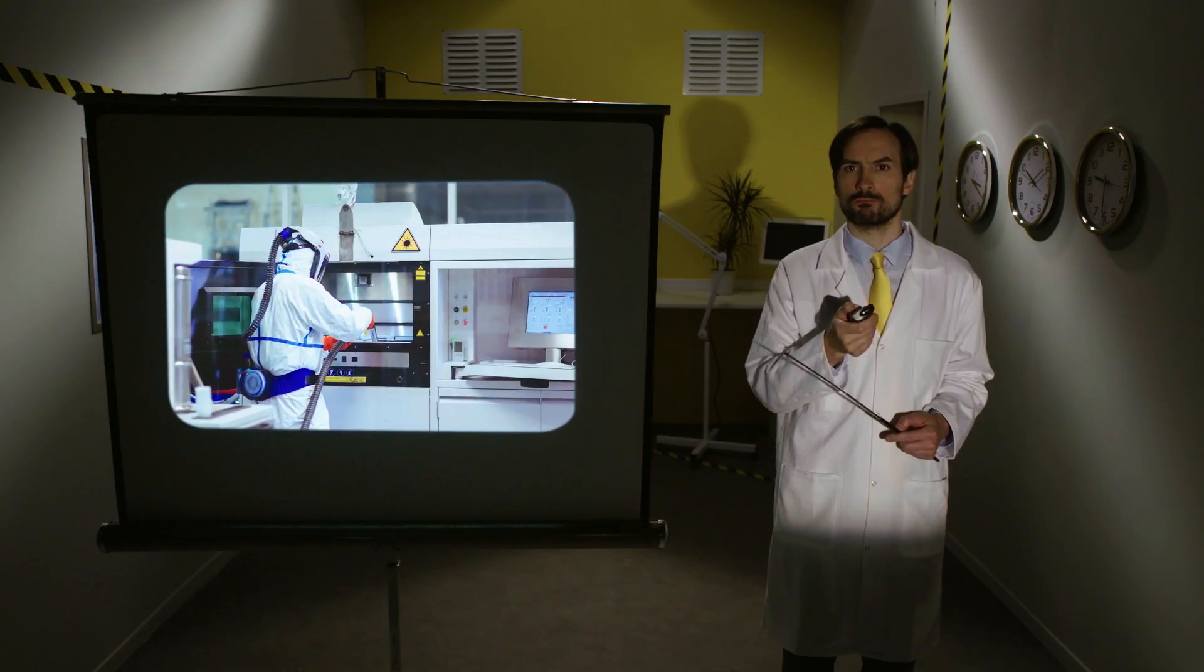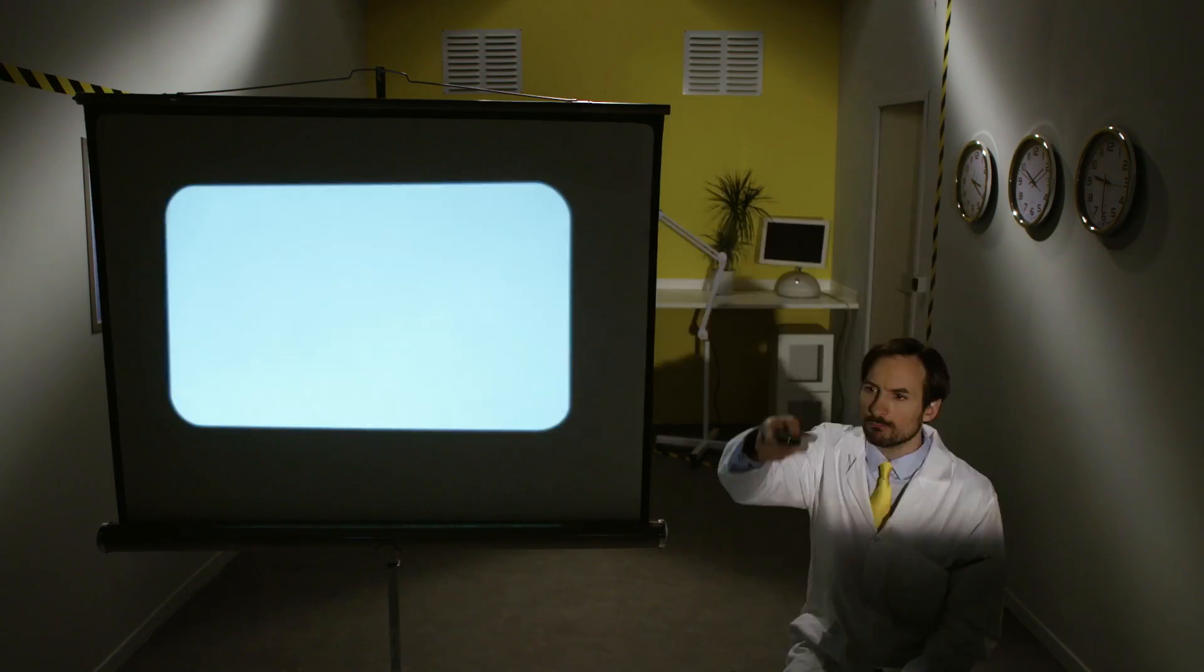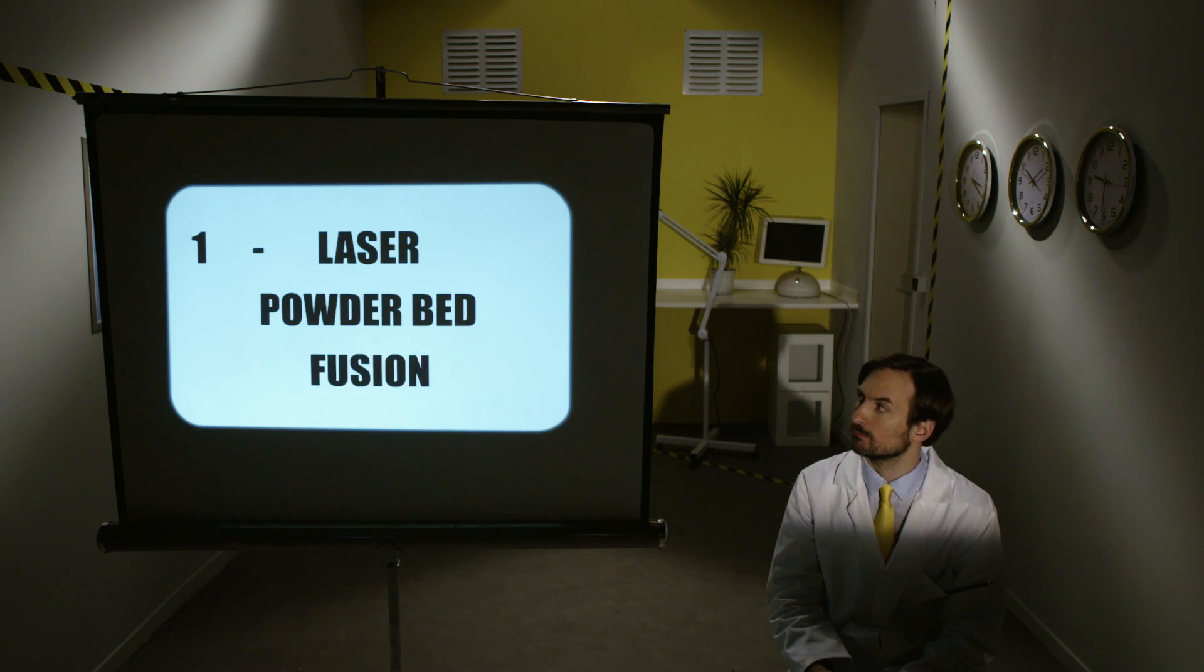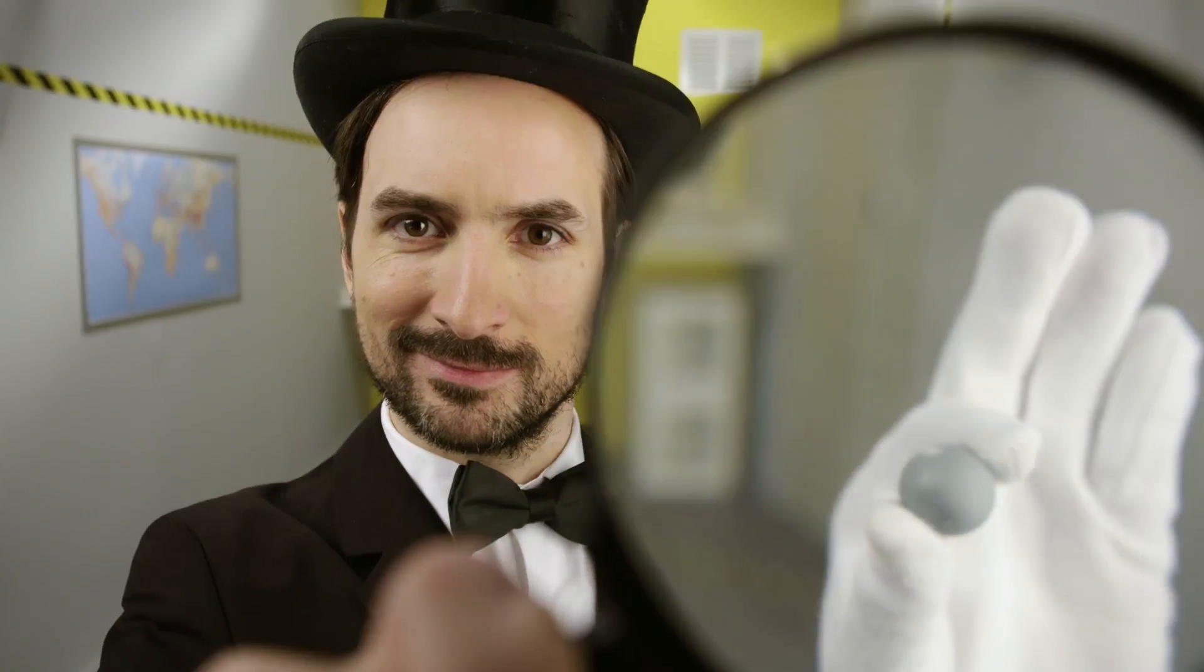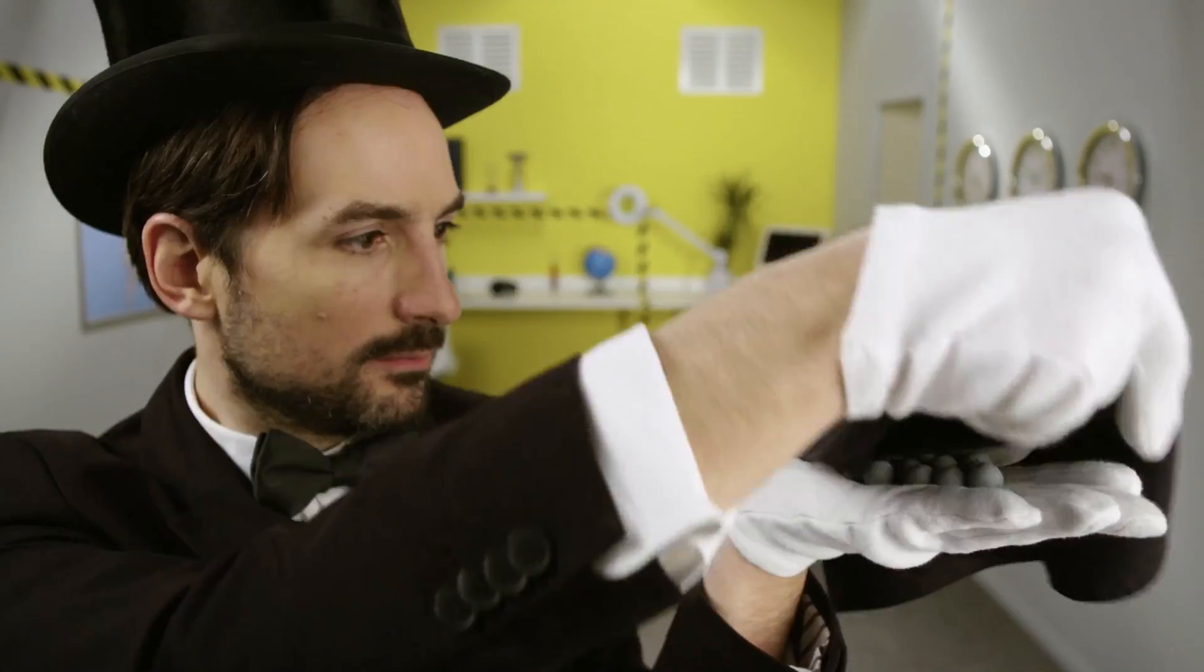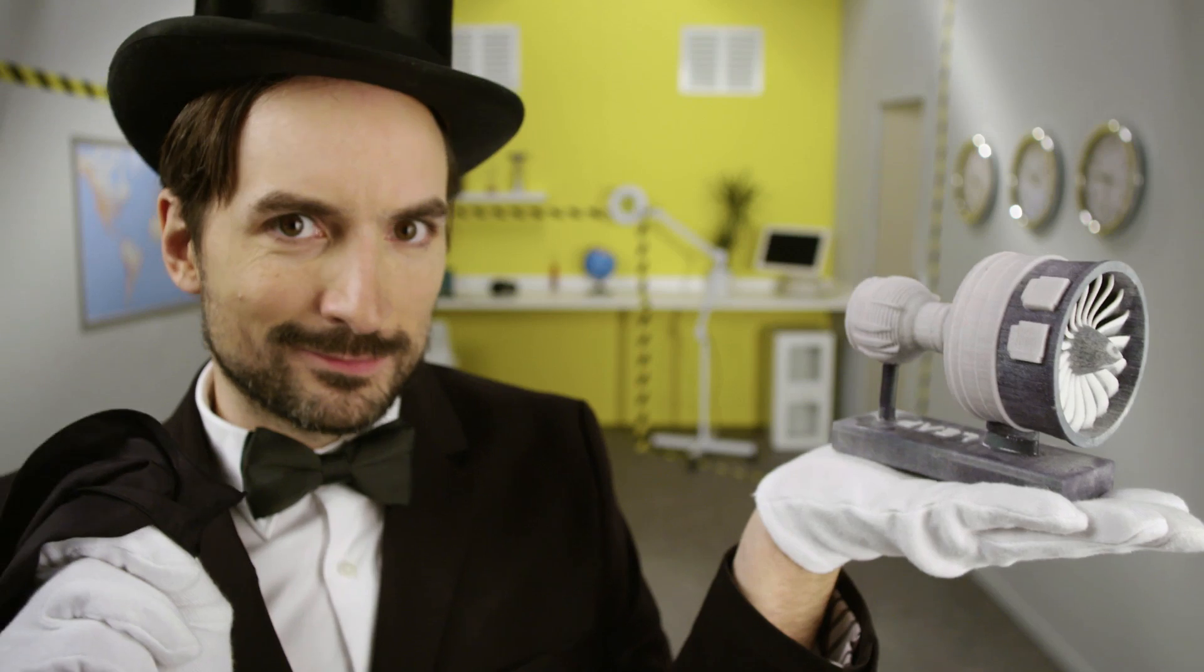Additive manufacturing uses very specific machines and processes. So, let's start with laser powder bed fusion. Here, the laser melts and fuses thin layers of metal powder. The tiny beads of metal gradually merge into the shape we want.